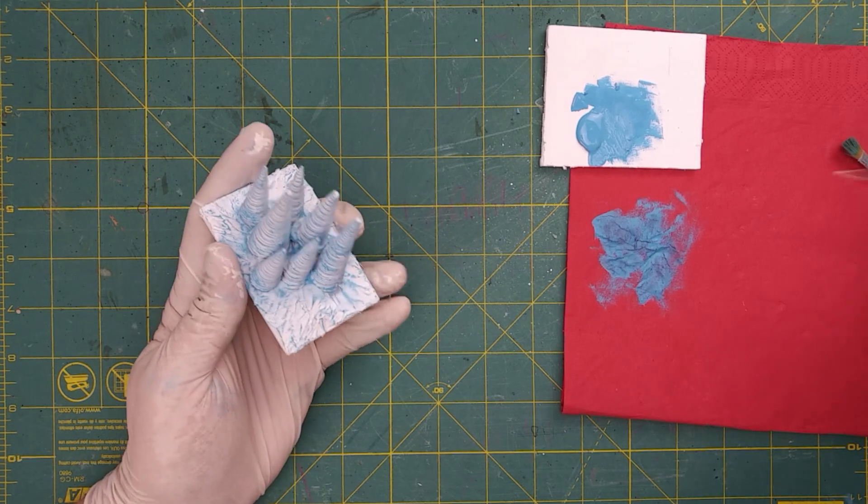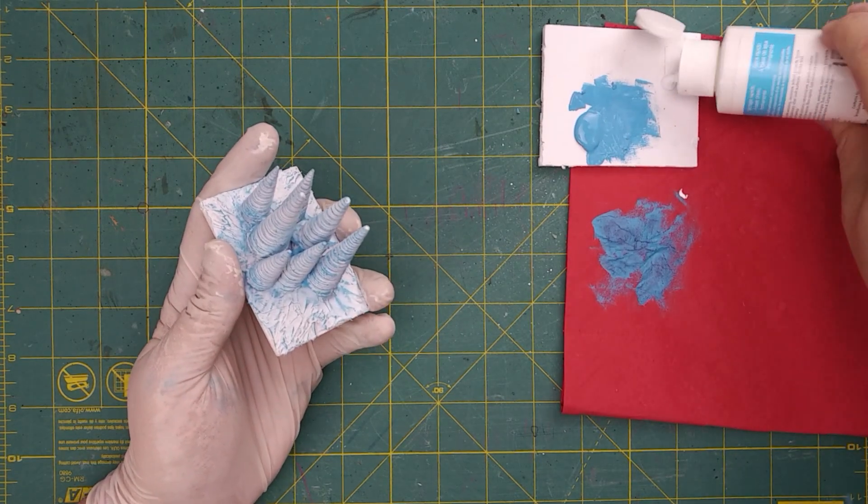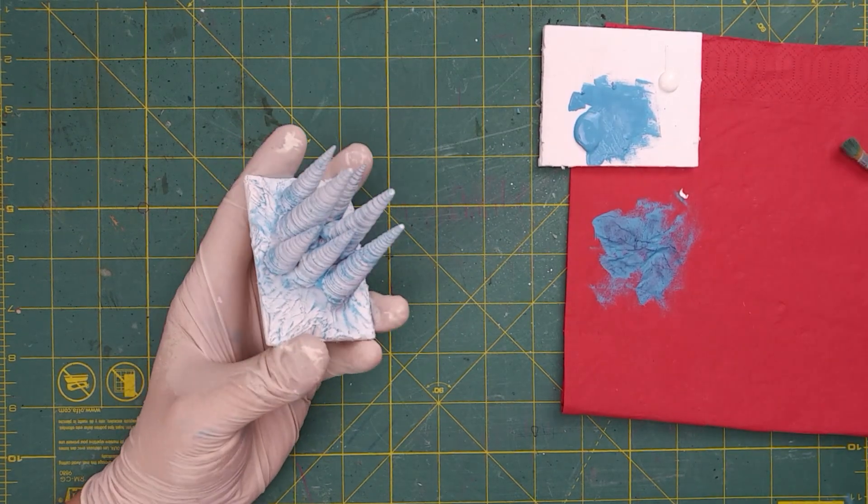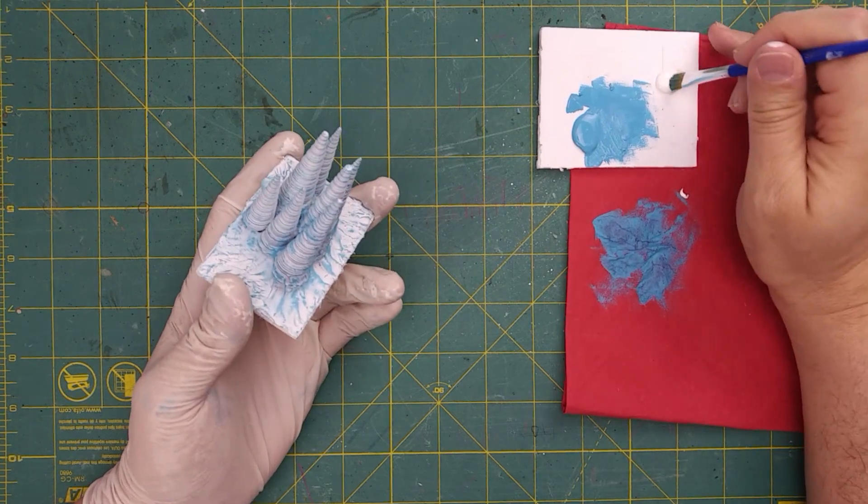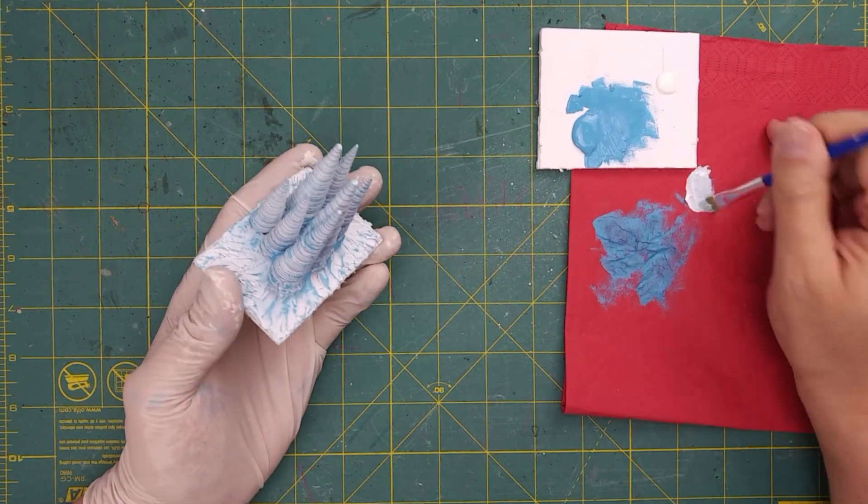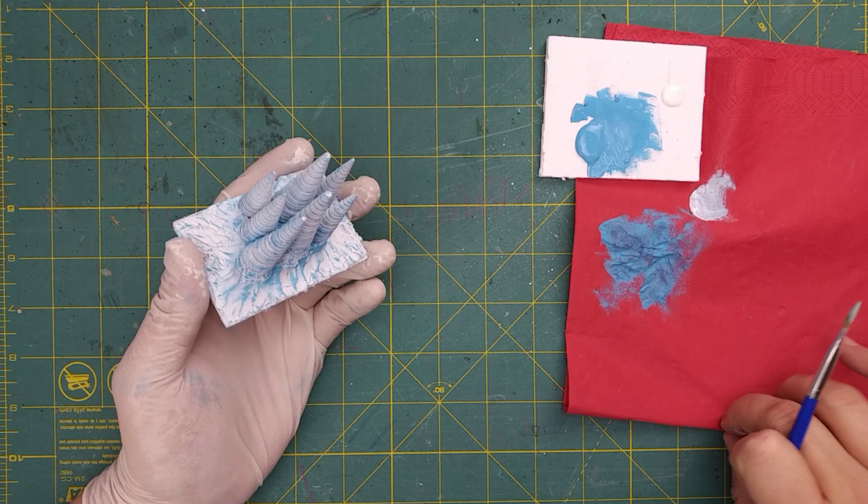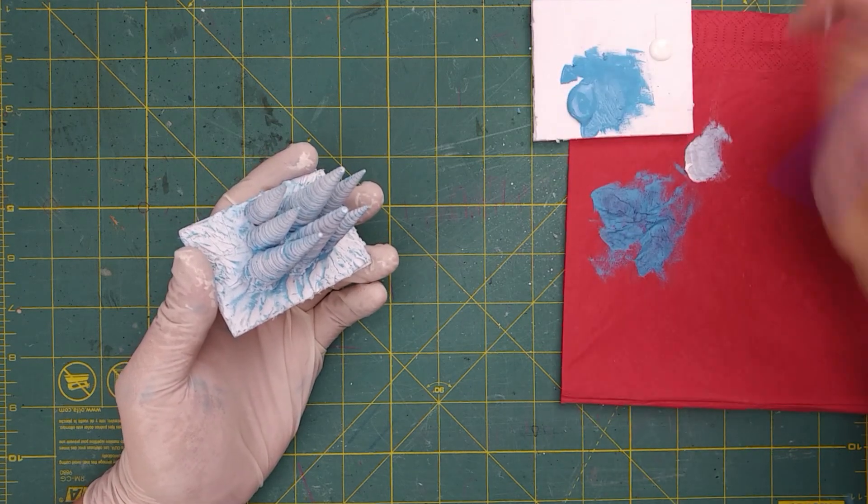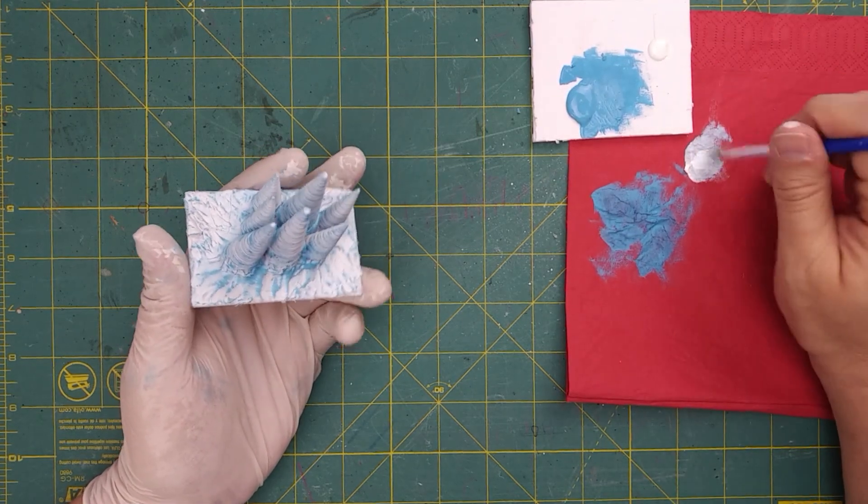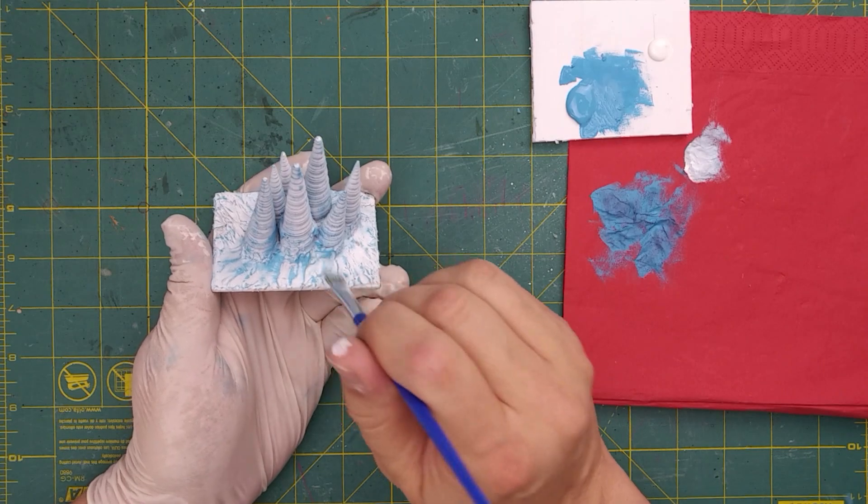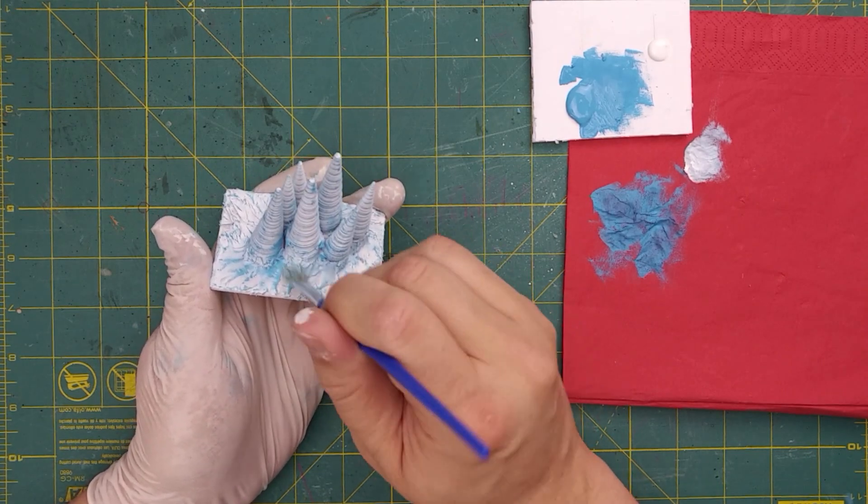Now I'm going to do some touch-up with this white paint to get rid of those clumpy areas where I have way too much blue. The blue will still show through, but that's perfectly okay.